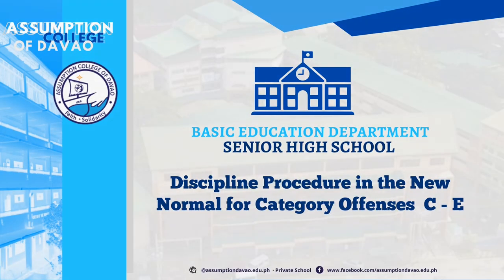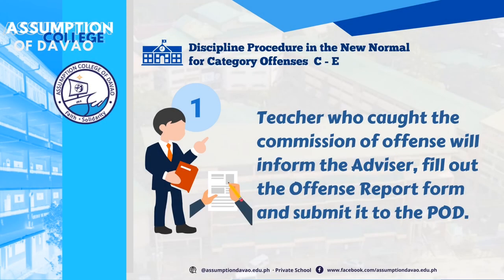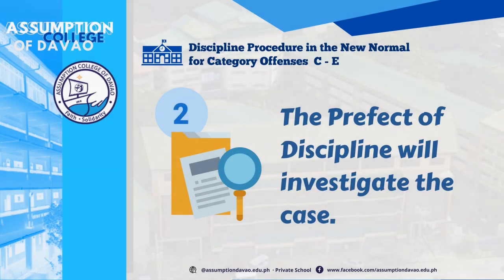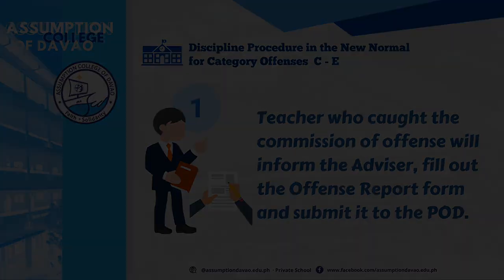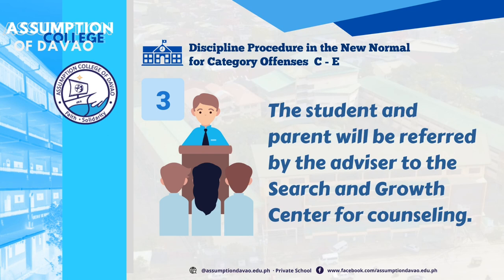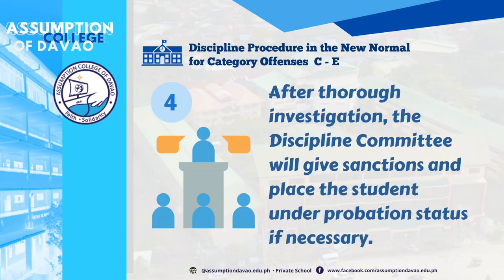Discipline procedure in the new normal for Category C to E offenses. Number 1: The teacher who catches the commission of an offense will inform the adviser, fill out the offense report form, and submit it to the POD. Number 2: The Prefect of Discipline will investigate the case. Number 3: The student and parent will be referred by the adviser to the search and growth center for counseling. Number 4: After thorough investigation, the discipline committee will give sanctions and place the student under probation status if necessary.